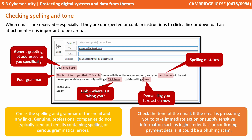Checking the spelling and tone of communications. When emails are received, especially unexpected emails or those containing instructions to click a link or download an attachment, it's very important to be careful. You should carefully check the spelling and grammar of the email and any links. Genuine professional companies do not send out emails containing spelling or serious grammatical errors. Carefully check the tone of the email — if it seems to be rushing you to take immediate action or supply sensitive information such as login credentials or confirming payment details, it could be a phishing scam.